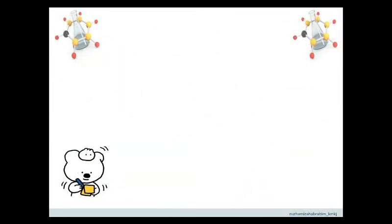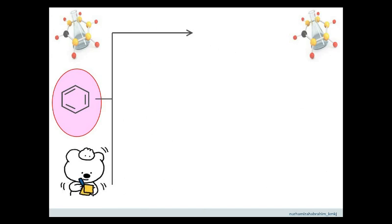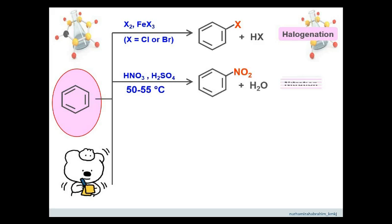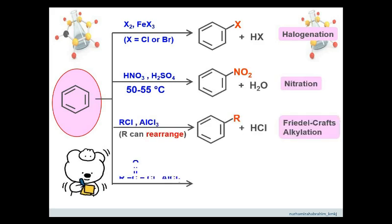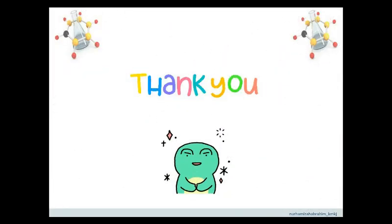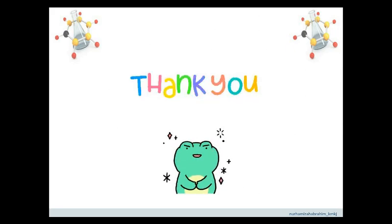These are the summary for electrophilic aromatic substitution of benzene. Note that only one hydrogen atom from the benzene is substituted with an atom or group for each reaction. You also need to remember the conditions for each reaction to occur. That's all for 6.3, Chemical Properties of Benzene and Its Derivatives. Thank you for watching.